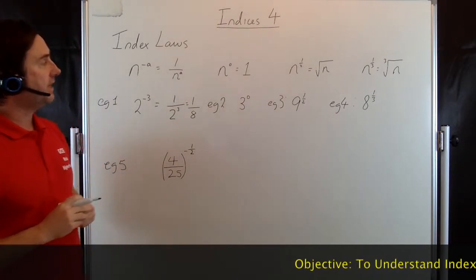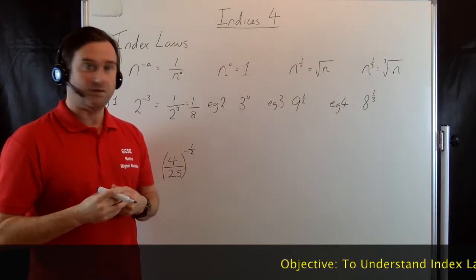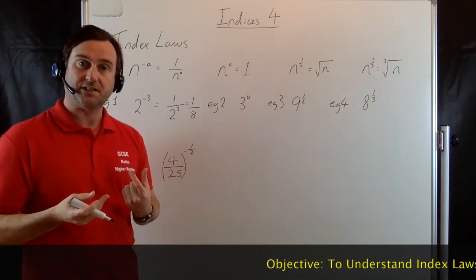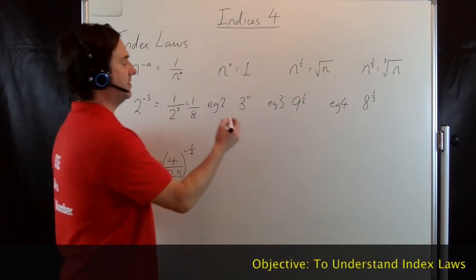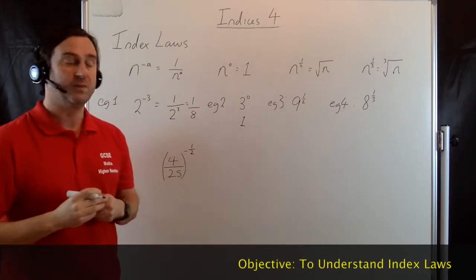Second law here: n to the 0 equals 1. Well, anything raised to the power of 0 is always going to equal 1, but it's a good idea to see why this is. So if we have a look at this one, 3 to the 0, we already know that 3 to the 0 will be 1 just by looking at the rule.